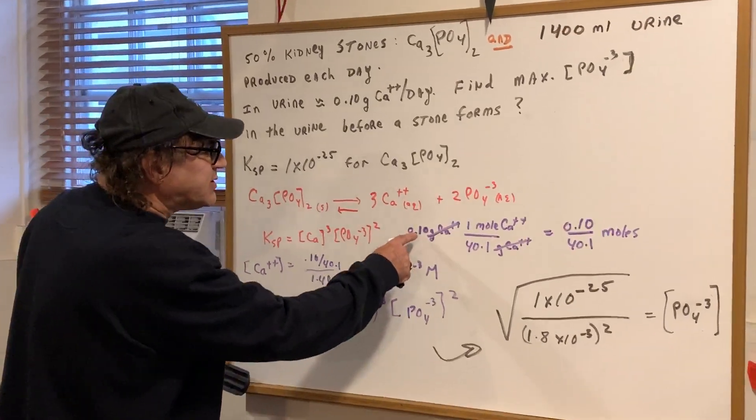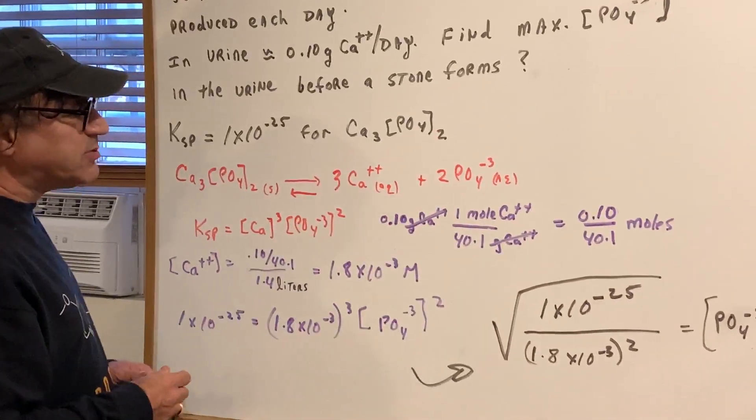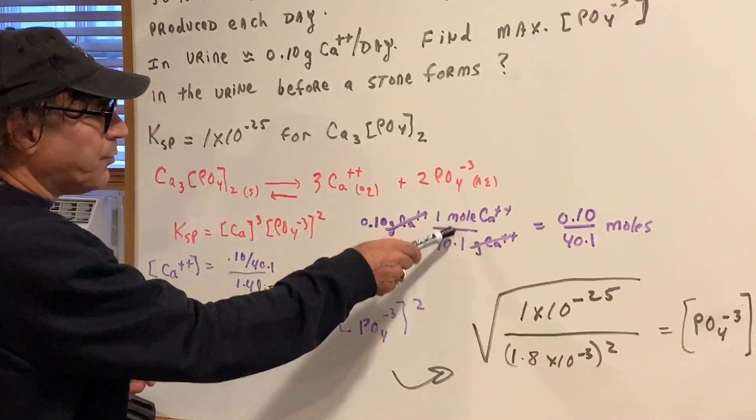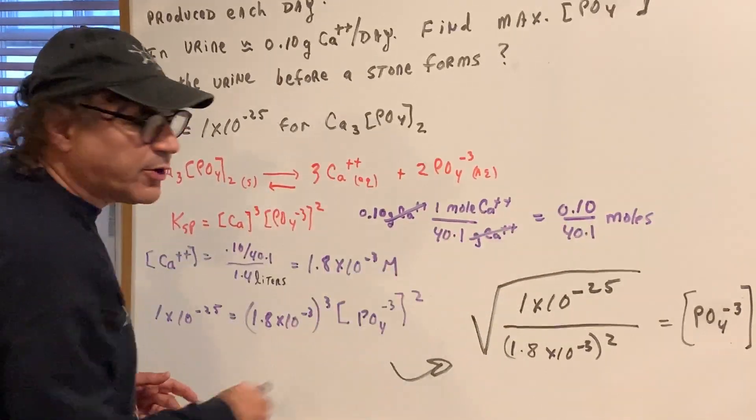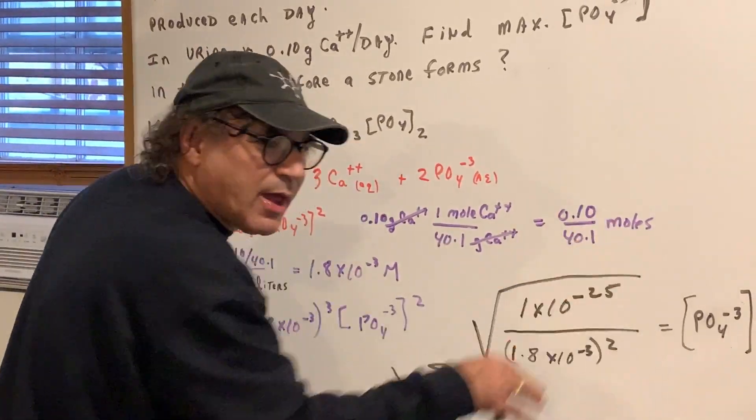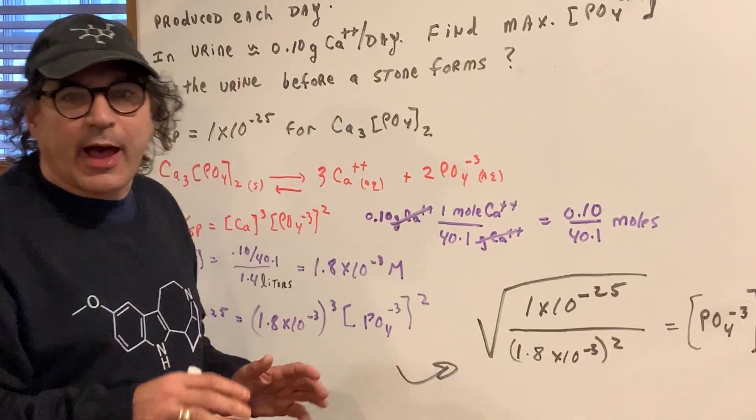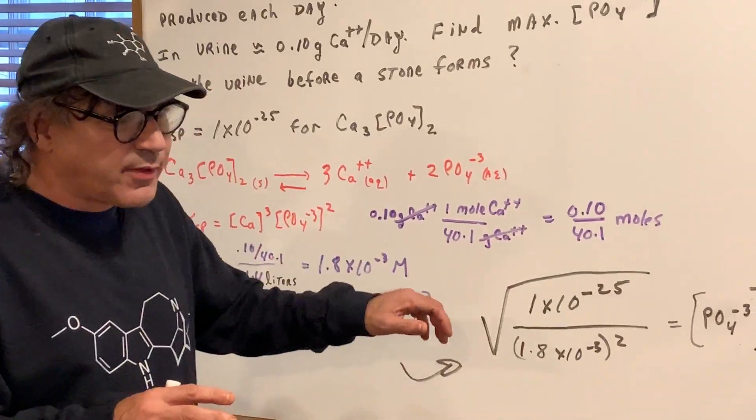Now, we're going to simply convert 0.10 grams of calcium. We look up the mass. The mass is 40 grams, and you convert it into moles. Don't worry about the math. You can do this on a calculator. All I care about is you're understanding the concept.